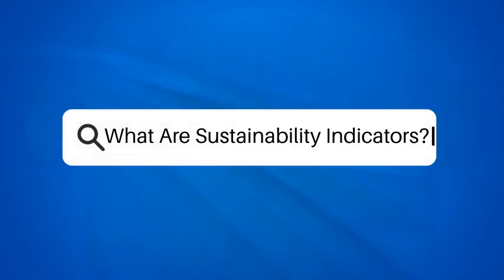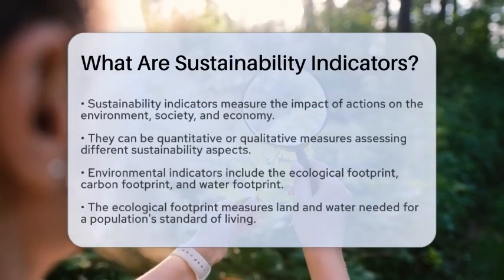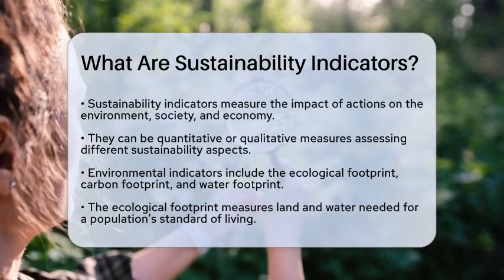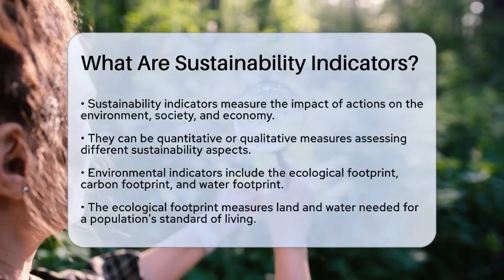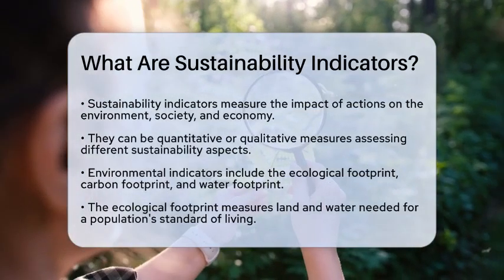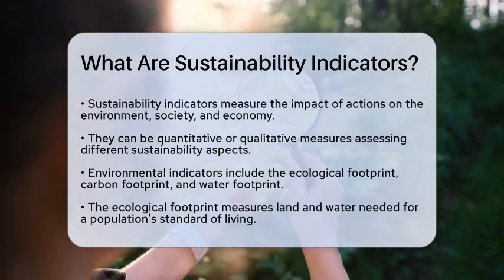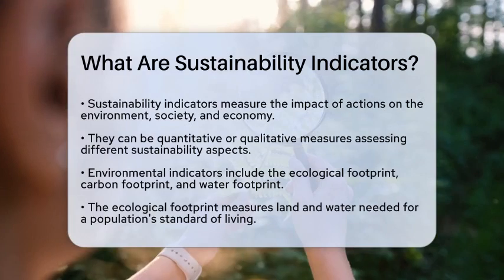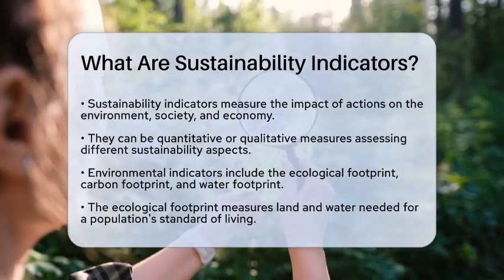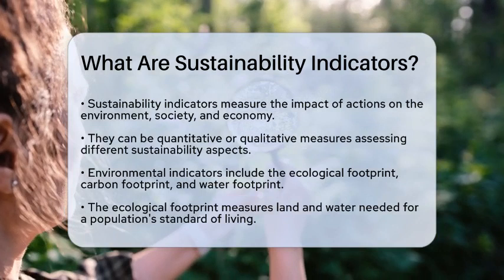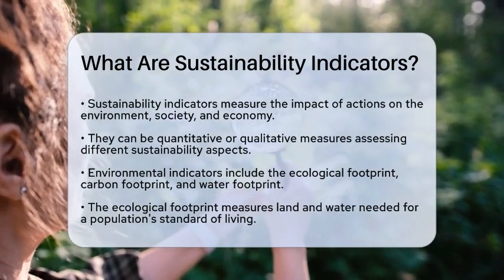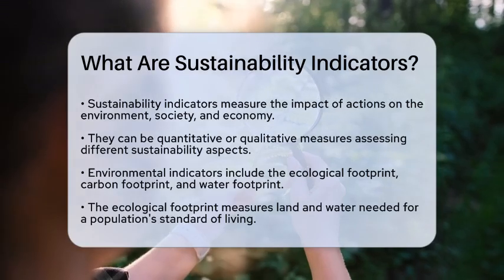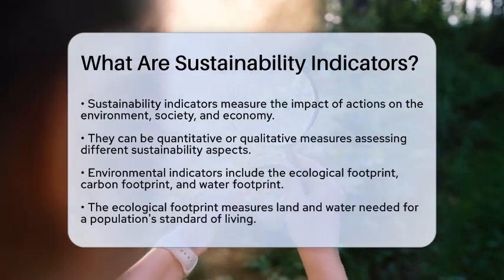What are sustainability indicators? If you're curious about how we measure the impact of our actions on the environment, society, and the economy, you're in the right place. Let's break down what sustainability indicators are and how they work. Sustainability indicators are quantitative or qualitative measures that help us assess various aspects of sustainability. These indicators can focus on different areas such as environmental, social, and economic dimensions.